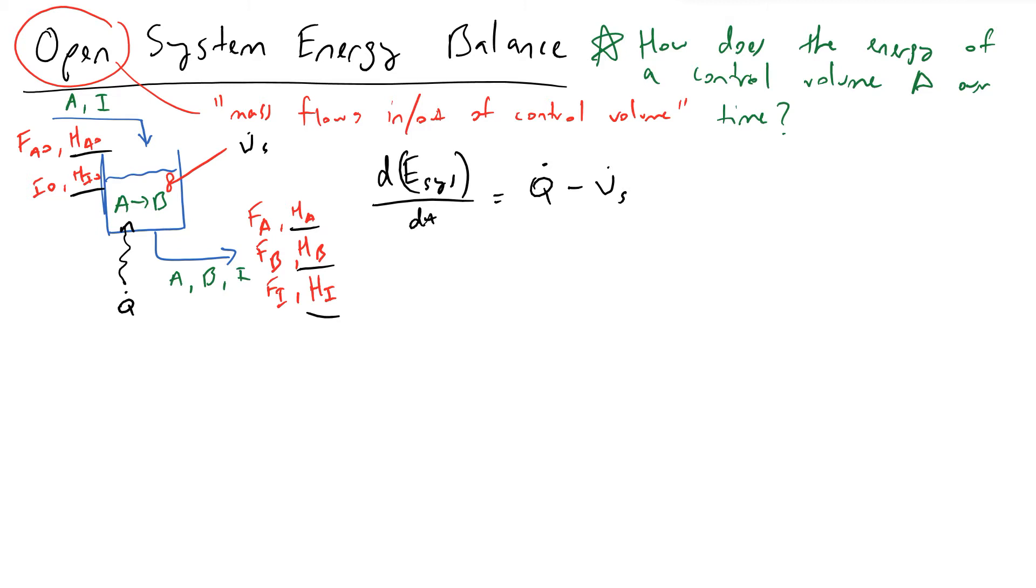Ws refers to the shaft work that is being done by your system. So if we were having a turbine inside of our reactor for instance and we were taking kinetic energy out of our system to drive this turbine, we would be performing shaft work by our system and we would therefore be removing energy, so we would expect to have a negative sign in front of Ws dot.